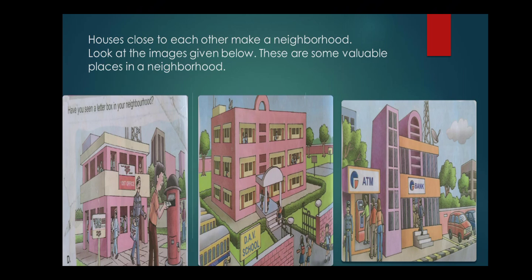Look at the images given below. These are some valuable places in a neighborhood. In the first picture you can see it's a post office. In the middle picture you can see this is a school. And in the last third picture you can see this is a bank. So all these places are important in a neighborhood.